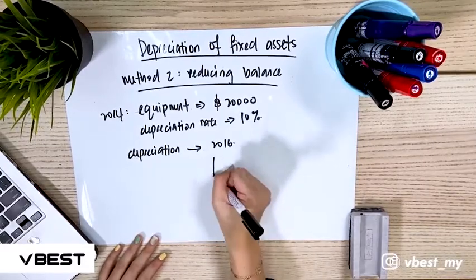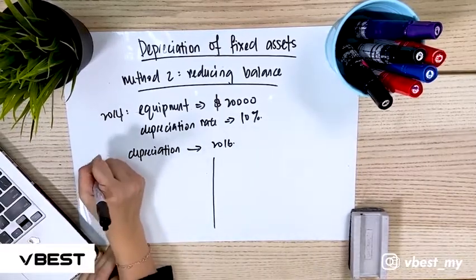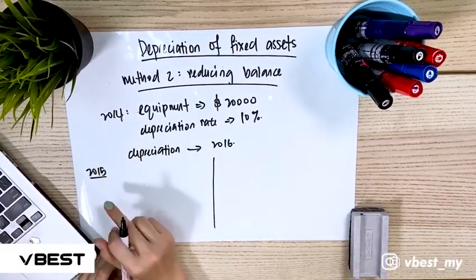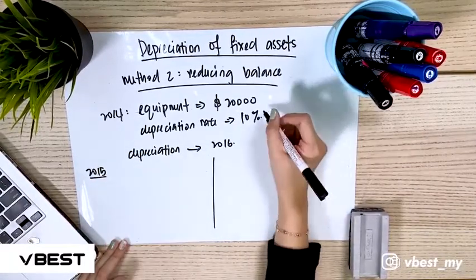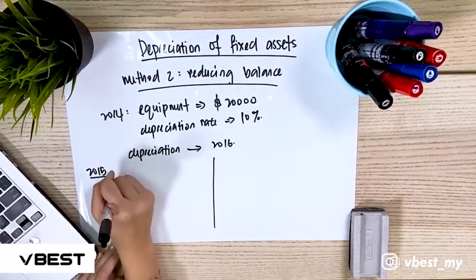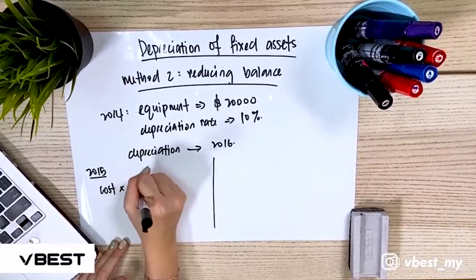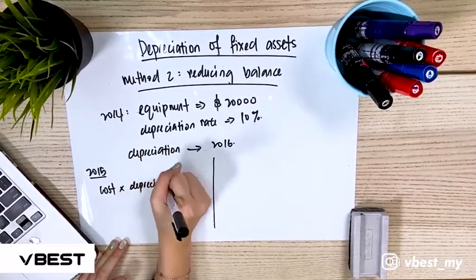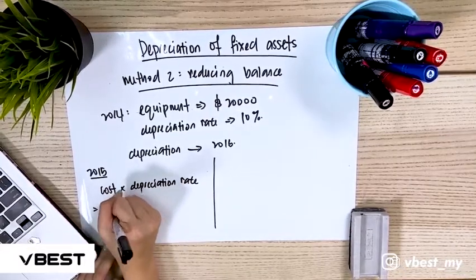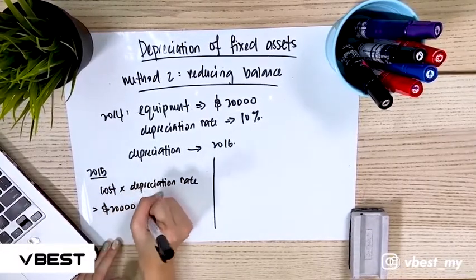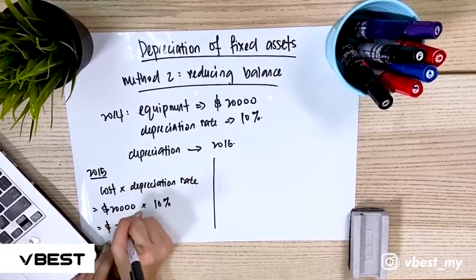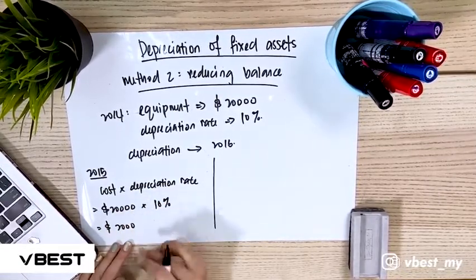First we calculate the first year, which is 2015. Since it is the first year, we just use the cost multiplied by the percentage: 20,000 times 10% equals 2,000. This is the depreciation for the first year.